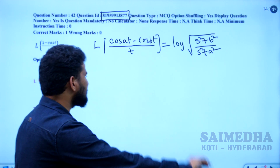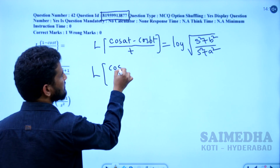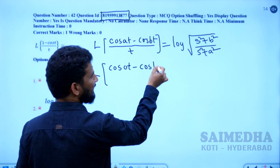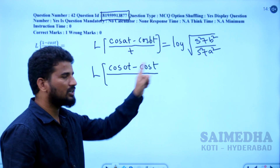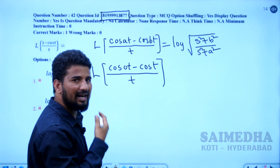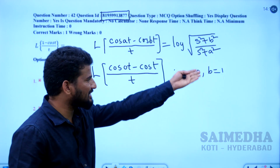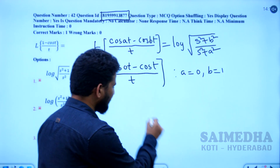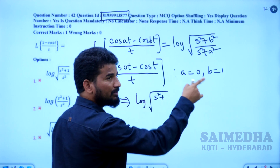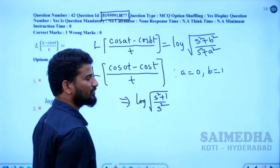To convert the given form, note that 1 minus cos t = cos(0·t) minus cos(1·t), since cos(0) = 1. So comparing with the formula, a = 0 and b = 1. Substituting: the required answer is log[√(s² + b²) / (s² + a²)] = log[√(s² + 1²) / (s² + 0²)] = log[√(s² + 1) / s²]. So the correct answer is logarithm of root of (s² + 1) divided by s².